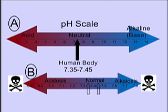Welcome back, I'm your host David. We're continuing with part 2 — pH. pH is defined as the acid-base balance of substances. If you look at slide number one, part A represents the pH scale from 1 to 14, with 7 being the pH of water, which is neutral. The human body is slightly on the alkaline side of neutral.